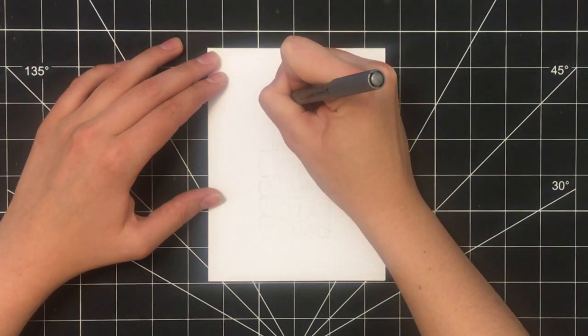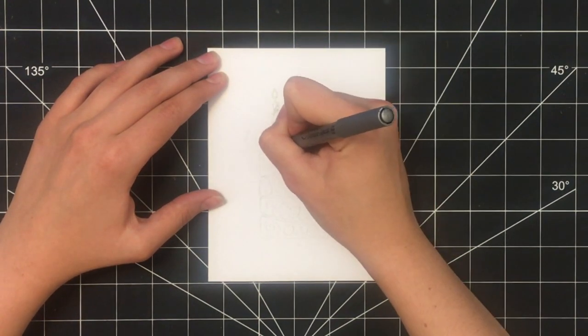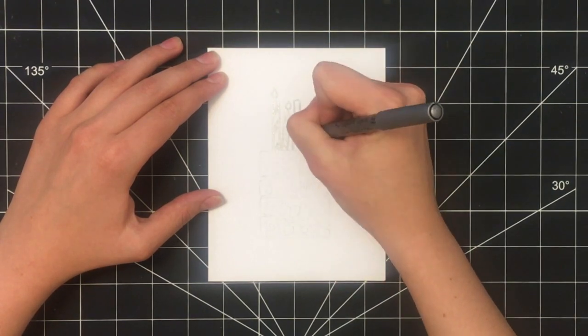Once you have that complete, take your silver pen and simply trace over all of the pencil lines that you'd previously drawn.